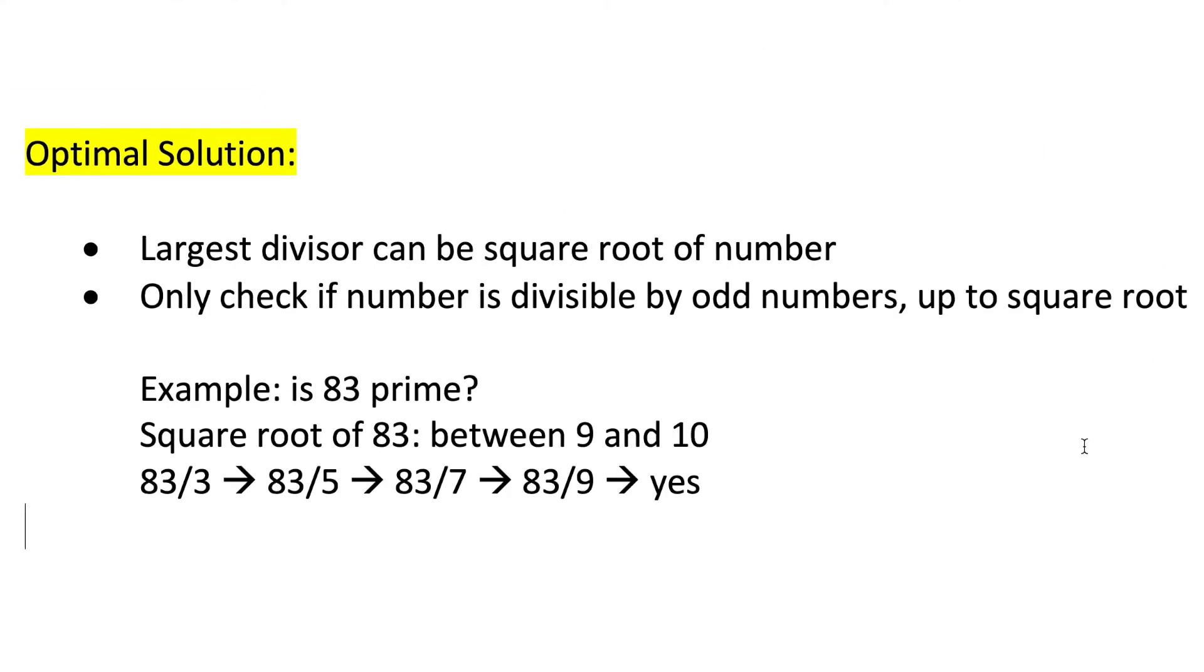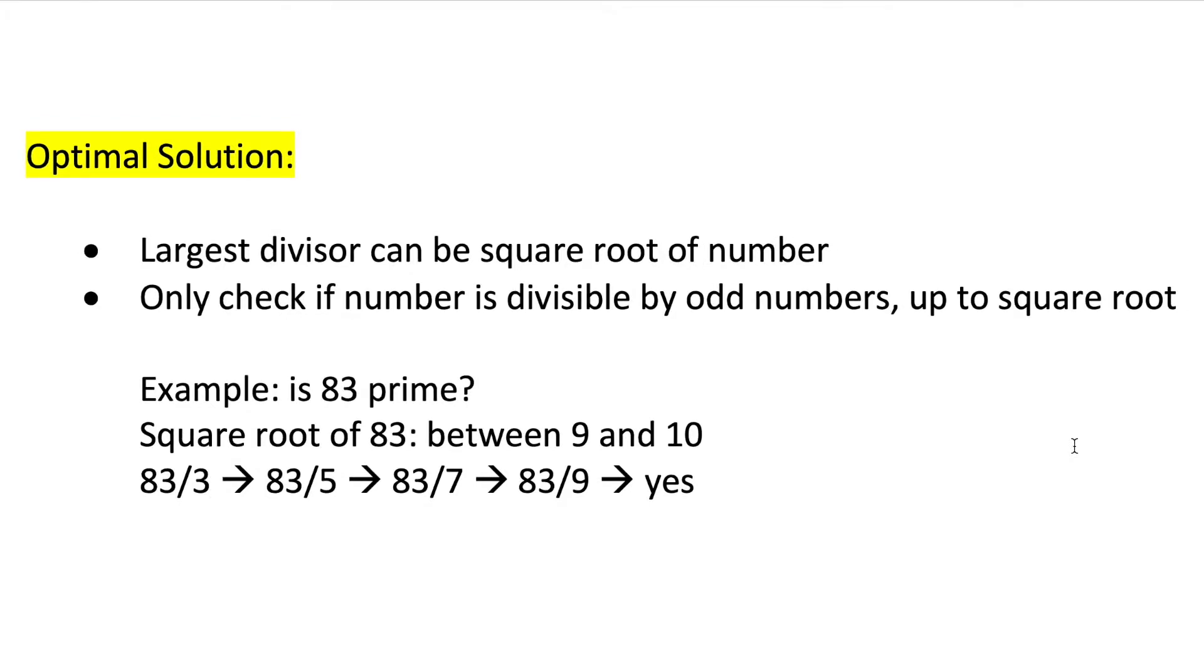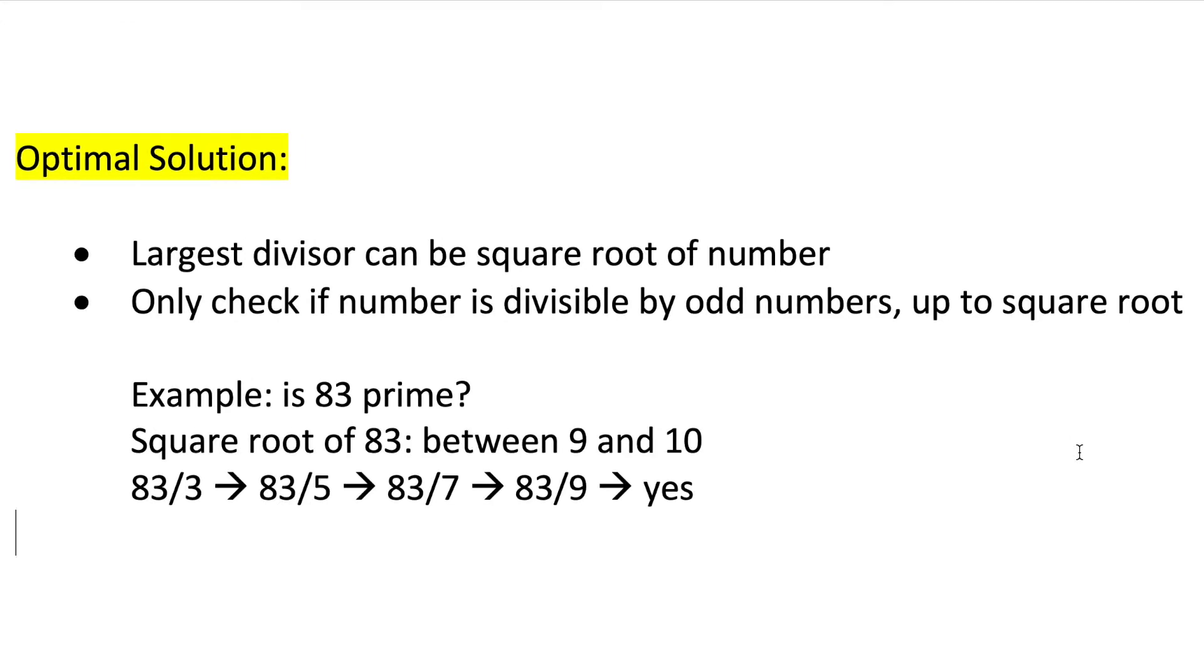While our previous solution was better than our very first solution, it still can take quite a bit of time for large numbers. We can reach a more optimal solution by realizing that the largest divisor of a number is the square root of that number. Because of this, we no longer have to check if a number is divisible by every odd factor between 3 and itself. We now only have to check if a number is divisible by odd numbers up to its square root.